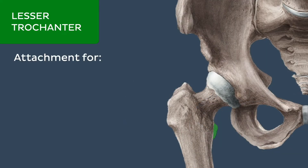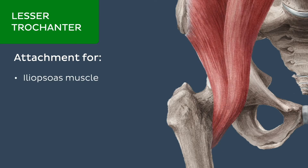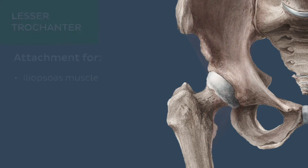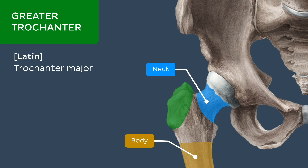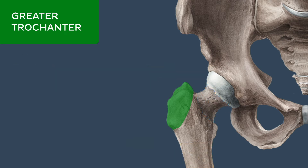The lesser trochanter forms the attachment site for the iliopsoas muscle. The greater trochanter is a large, roughly quadrangular, palpable prominence on the supralateral aspect of the proximal end of the femur. It projects superiorly from the superior aspect of the junction between the neck and body of the femur.